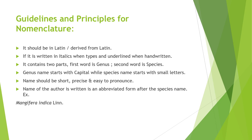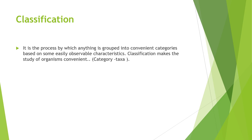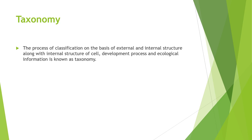Guidelines for nomenclature: names should be in Latin or derived from Latin, written in italics when typed and underlined when handwritten. The name should be short, precise, and easy to pronounce. The author's name is written in abbreviated form after the species name. Classification is the process by which organisms are grouped into convenient categories based on easily observable characteristics. Taxonomy is the process of classification based on external and internal structure, cell structure, development processes, and ecological information.